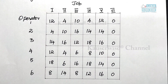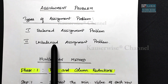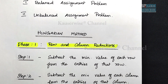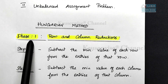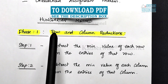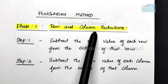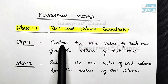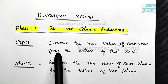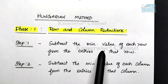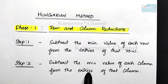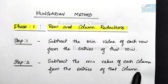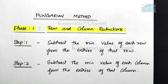Now let us see the step-by-step procedure to proceed further. We have converted the unbalanced into a balanced problem. According to the Hungarian method, it has 2 phases: phase 1 and phase 2. Under phase 1, there are 2 steps: row reduction and column reduction. For row reduction, subtract the minimum value of each row from the entries of that row. The same procedure applies for column reduction: subtract the minimum value of each column from the entries of that column. I will explain both steps along with the solution for better understanding.